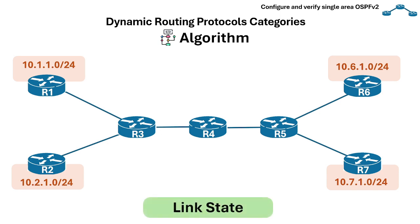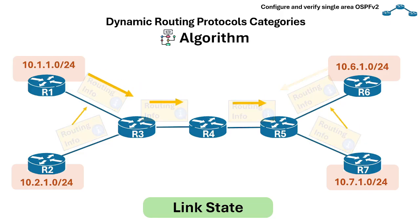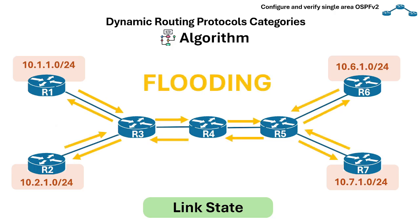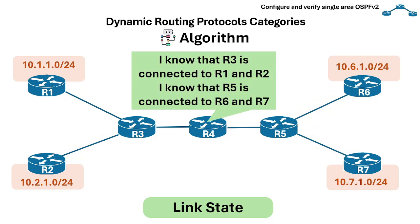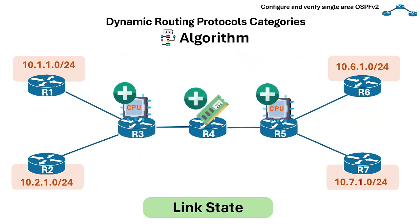Next are link state protocols. A link state protocol is a dynamic routing algorithm where each network router sends information about the state of all its connected links through a process called flooding. In the end, all routers know the entire topology. Link state protocols generally converge faster than distance vector protocols after network changes occur, but this comes at a cost of higher resource consumption, requiring more CPU and memory resources due to complex calculations and large database maintenance.